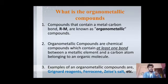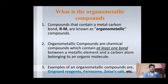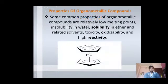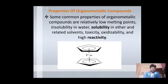An organometallic compound is a simple combination of R and M, where R is the organic part which is relative to carbon and M is the metallic part. If there is a direct bond between R and M — that is, between the organic part and the metallic part — then it is an organometallic compound. Examples include Grignard reagent, ferrocene, and Zeise's salt.